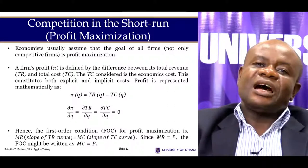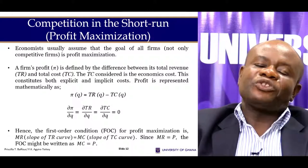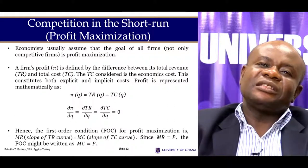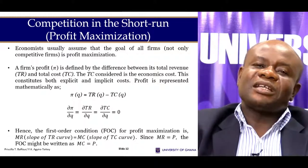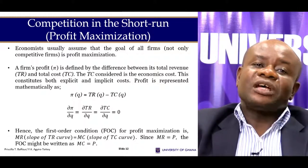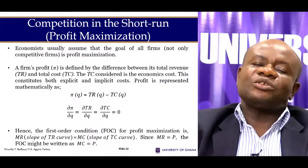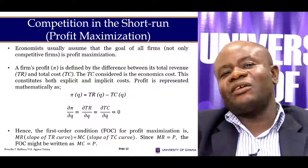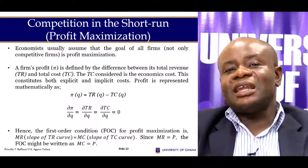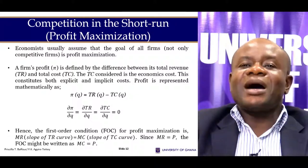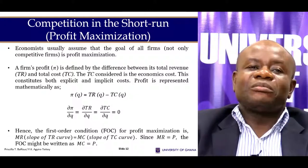dTR/dQ happens to be marginal revenue, and dTC/dQ happens to be marginal cost. So in other words, when marginal cost is equal to marginal revenue, then the firm maximises its profit.